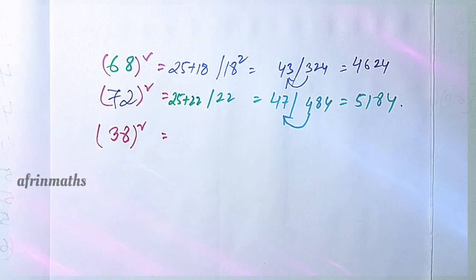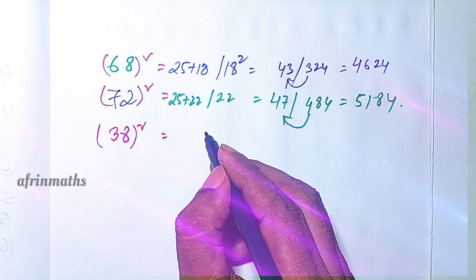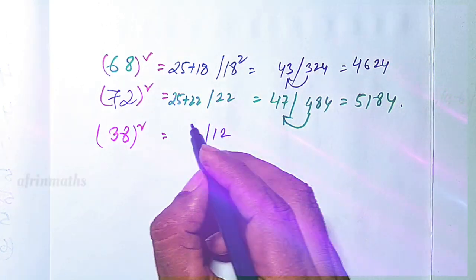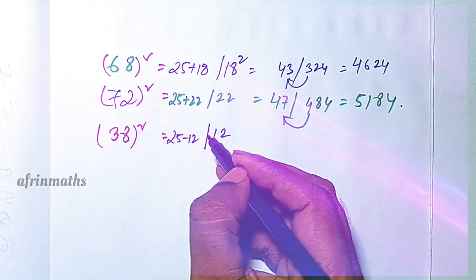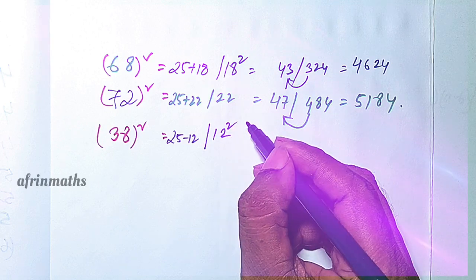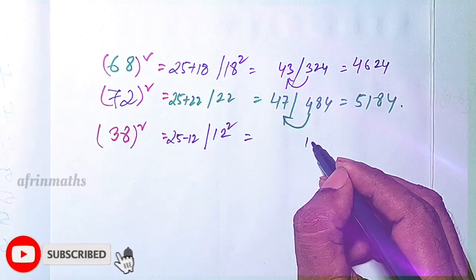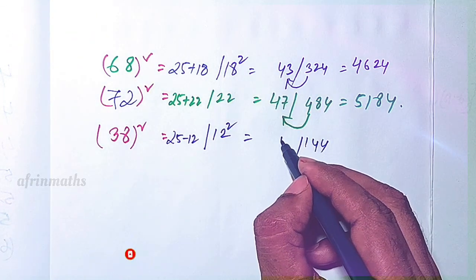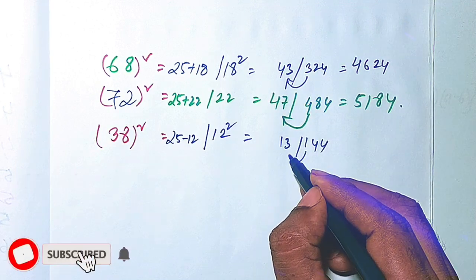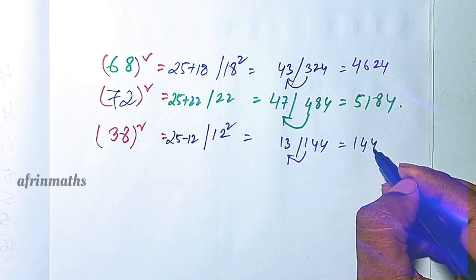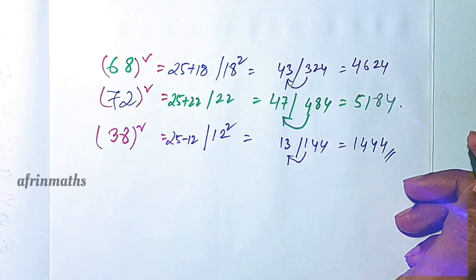Let us go to 38 squared. Since it is less than 50, it is 12 away from 50, so we subtract: 25 minus 12 is 13. 12 squared is 144. The 1 carries over, giving 13 plus 1 equals 14. The answer is 1444. You can try this and give me the answer in the comment section.